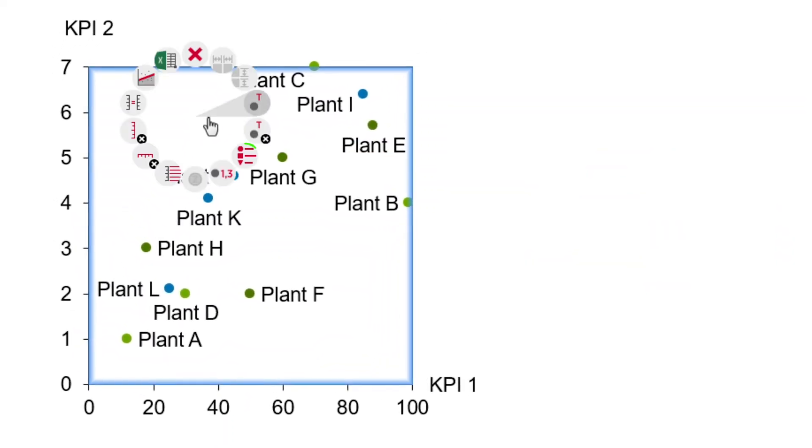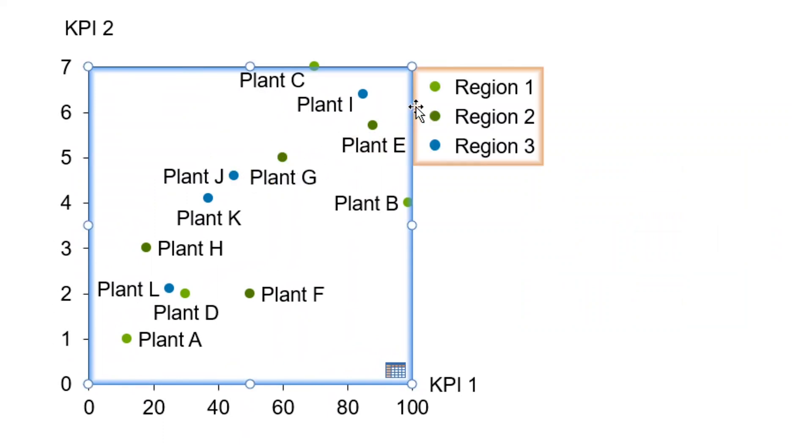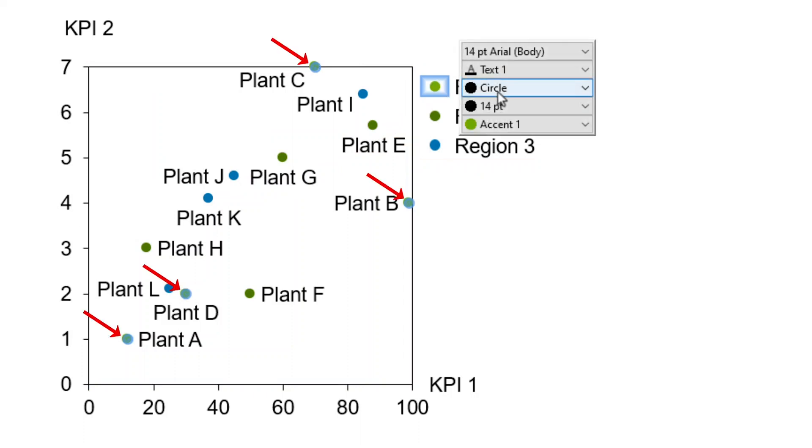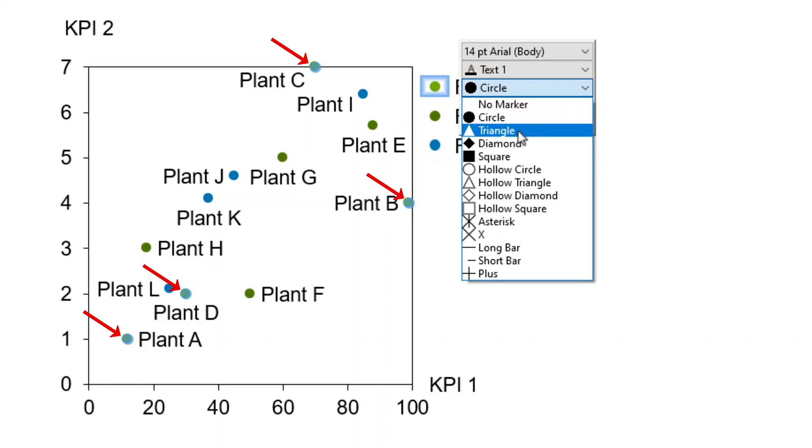Right-click onto the chart and select Add Legend to insert a legend for the different groups. Left-clicking on a data point in the legend will select all data points of that group so that you can, for instance, change the format in the drop-down menu.